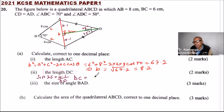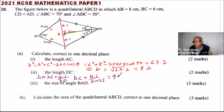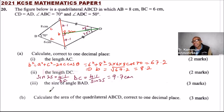This implies DC equals 4.1 divided by the sine of 25. Using the calculator: 4.1 divided by sine 25 gives 9.7014. To one decimal place, DC is 9.7 centimetres.